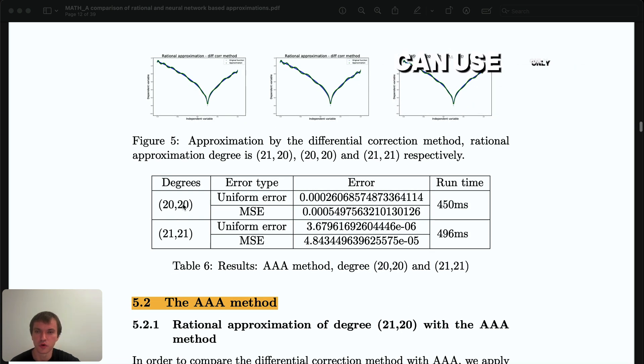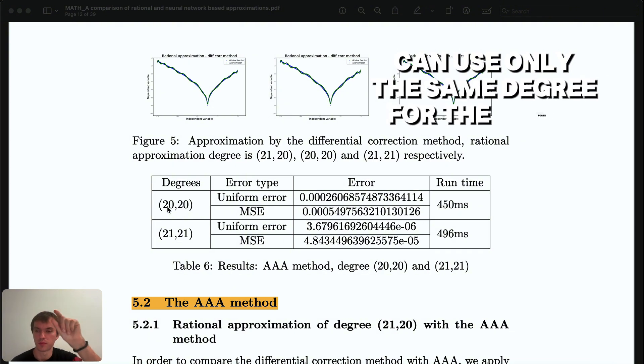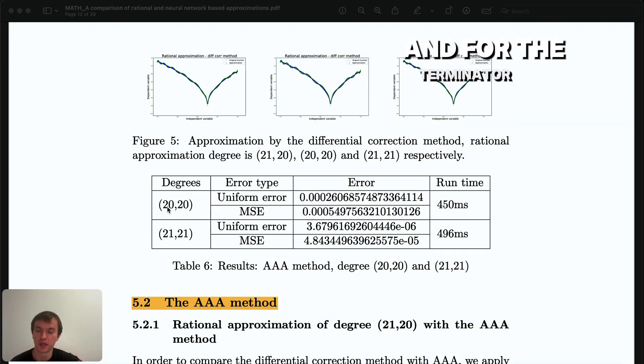But unfortunately what they do is for AAA they can use only the same degree for the power for the top and for the denominator of the rational function. Overall it's a really good paper, it provides nice experiments and computational examples.